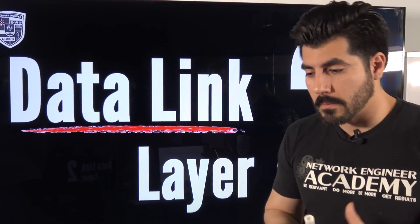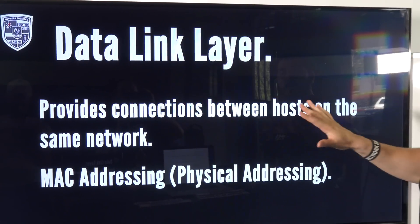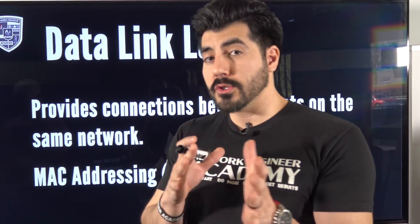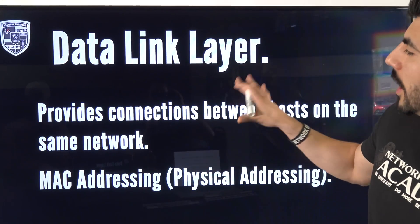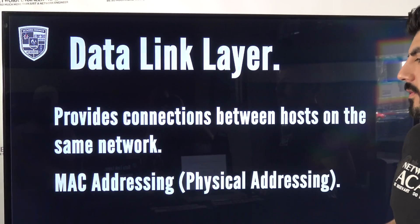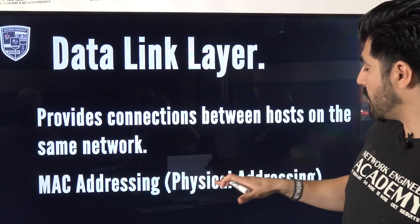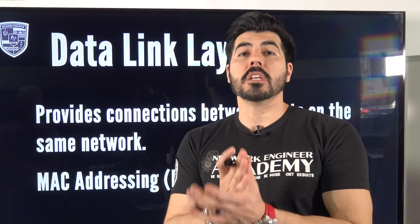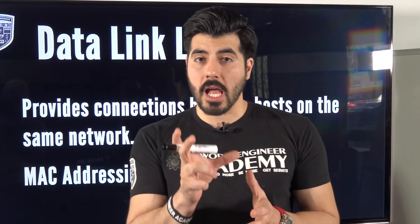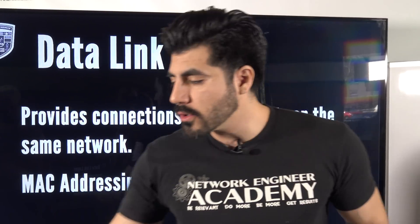Layer two is the data link layer. It provides connection between hosts on the same network — think switching. Instead of IP addressing, we use MAC addressing, which is physical addressing. MAC addresses come from the manufacturer and never change.